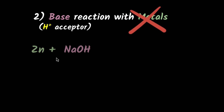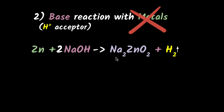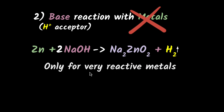But there are some exceptions. If you have zinc reacting with a base like NaOH, technically nothing should happen because zinc cannot provide H+ ions to NaOH. But zinc is such a reactive metal that it's actually going to kick the hydrogen out. So you will actually get sodium zincate plus hydrogen gas. This is a very rare, exceptional case — it's a complex salt. In general, we'll say this only works for very reactive elements, and bases do not react with metal.